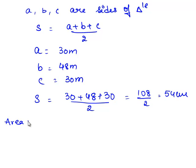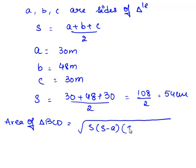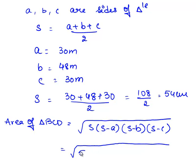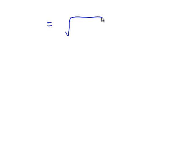Now we shall substitute the value of S in the formula for the area of triangle BCD, which is equal to square root of S × (S − a) × (S − b) × (S − c). This gives us square root of 54 × (54 − 30) × (54 − 48) × (54 − 30), which is square root of 54 × 24 × 6 × 24.